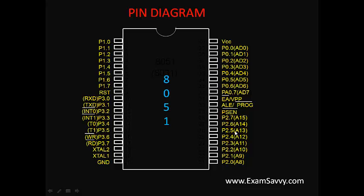Port 0 with its 8 pins carries the higher-order address lines, and port 2 with its 8 pins carries the lower address lines. Port 3 is also dual in nature — by default it is used for general I/O purpose. Based on our need, wherever we want to connect, like LCD displays, we can connect to any of these ports — port 0, port 1, or port 2. When ALE is 0, data lines are selected; when ALE is 1, address lines are selected.